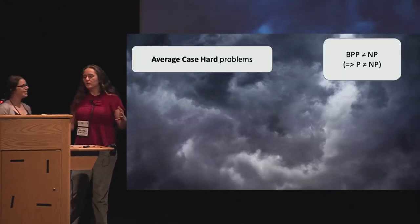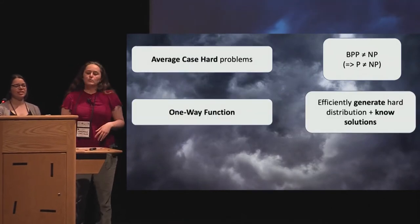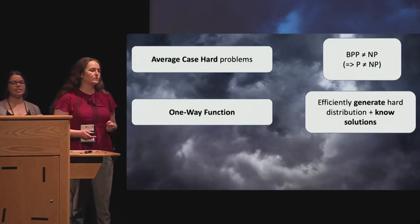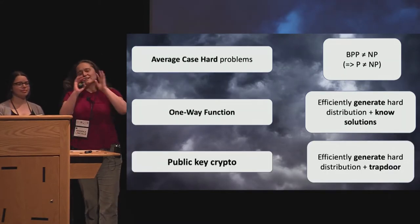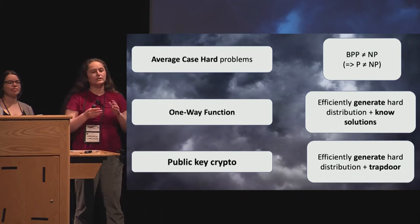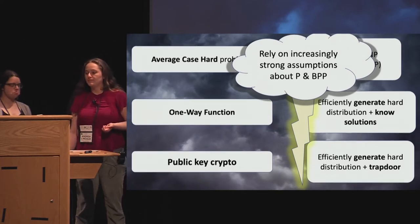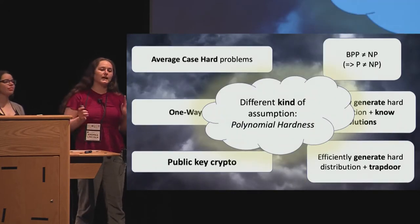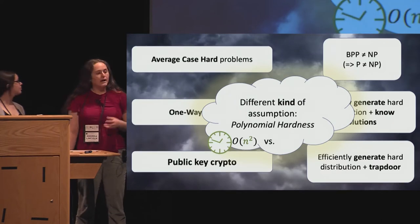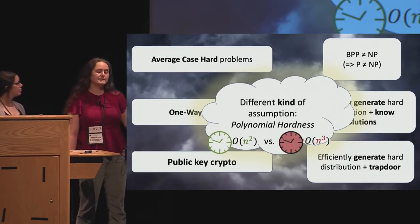So what do we want in this world? We want average case hard problems, of course. We need BPP not equal to NP. But additionally, we don't just want that these problems are hard. We'd like to be able to efficiently generate both the problems and their solutions so we can get some nice one-way functions. But we also want public key cryptography. We want to be able to efficiently generate a problem that's hard and generate a trapdoor to that problem. But these rely on increasingly strong assumptions on P, BPP, and NP. So we'd like to work with a different kind of assumption, a fine-grained complexity assumption based on polynomial hardness of problems. What we mean by polynomial hardness here is that we want to distinguish between, for example, problems that take N squared time and problems that take N cubed time.